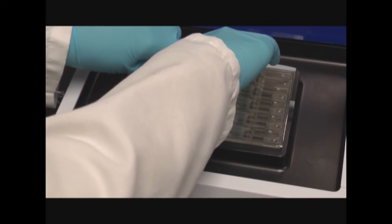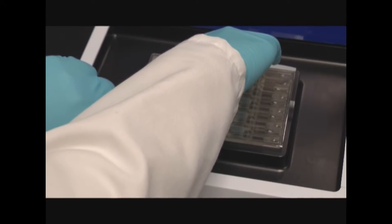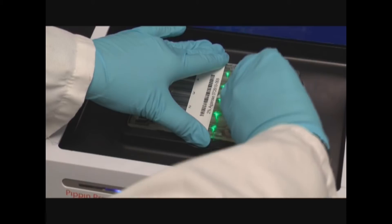Hold the cassette down firmly with one hand and remove the tape seals by pulling the white tabs towards you. Use a slow, deliberate pressure to remove the tape to avoid spilling buffer from the reservoirs.